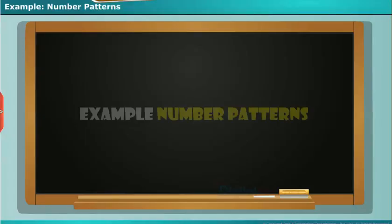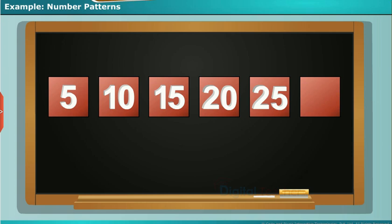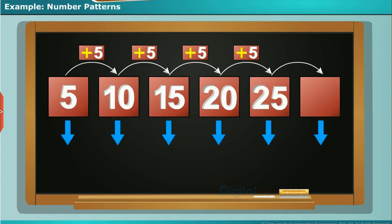Let us see some examples on number patterns. Look carefully at the given number series: five, ten, fifteen, twenty, twenty-five. Here the series starts at five and adds five each time. Five plus five equals ten, ten plus five equals fifteen. Keep adding five each time. But the same number pattern follows another number rule: multiply one, two, three, and so on by five.